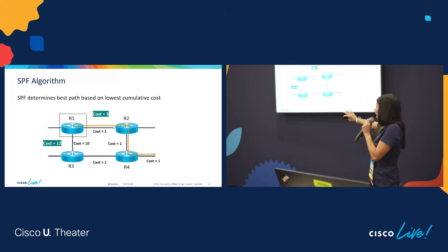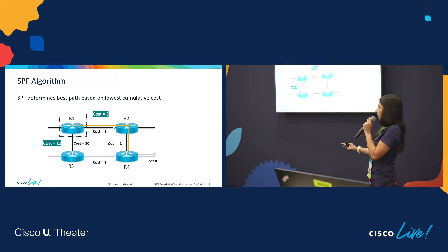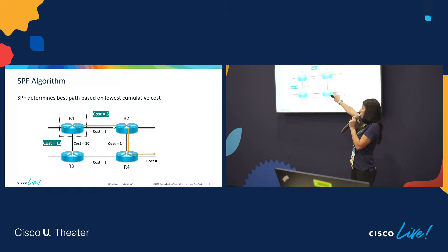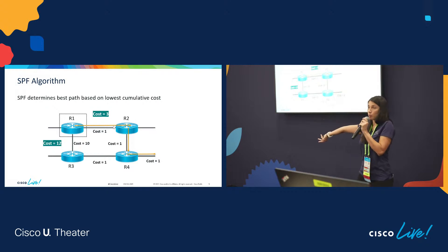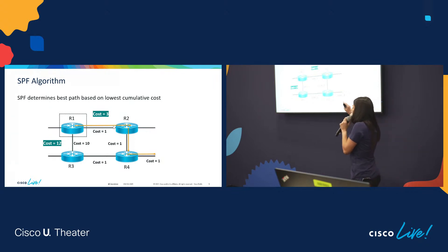Out of the box, OSPF uses the Dijkstra SPF algorithm — it's based on cost. Cost is based on the speed of a link. As we're looking at the cumulative cost, the shorter cost to the destination is the more preferred path. Just like shopping, we want a nice low cost. What is cost based on? We said bandwidth.